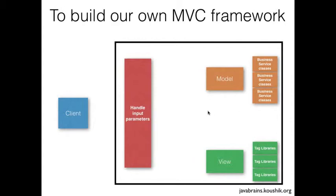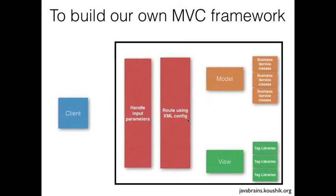Finally, I would need something that orchestrates everything — a module that calls the right model, redirects to the right view, and displays the output. This is a routing module. I would have some XML configuration and route depending on the request: if the client request URL is 'get user profile,' I call the right model; if it's 'change password,' I call the appropriate model and redirect to the right JSP. So there is one routing module that reads from an XML file. That way I don't have to write this module every time — for each of my 100 web applications I just configure using XML, and the module picks it up. The XML is different per application, but the modules are shared. This would be an initial design of my own MVC framework.